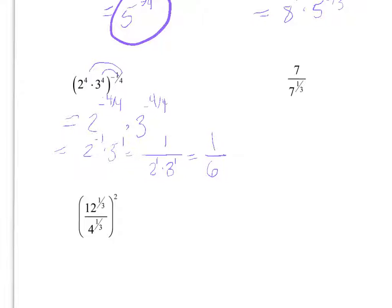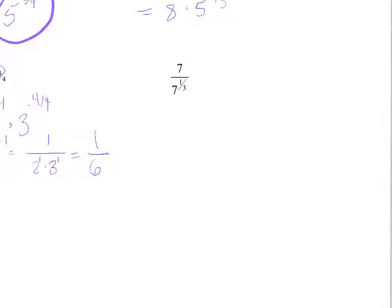Now be careful, because on this next one, we have 7s, but it almost looks like I don't have an exponent on top. Remember, if you're missing an exponent, you can always put a 1 there. So we're going to subtract exponents, 1 minus 1 third, and so then that would be 7 to the 2 thirds. Since I can't cube root the 7, I'll just leave it alone.